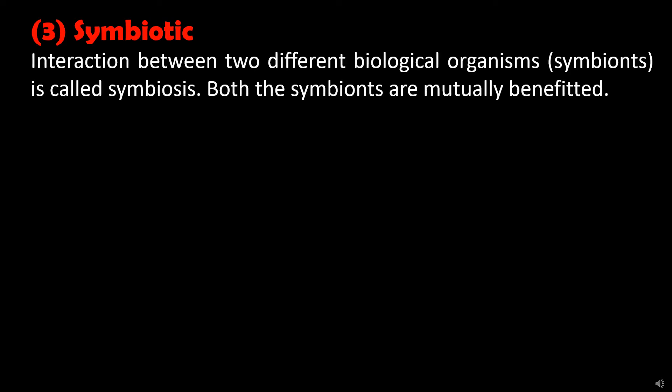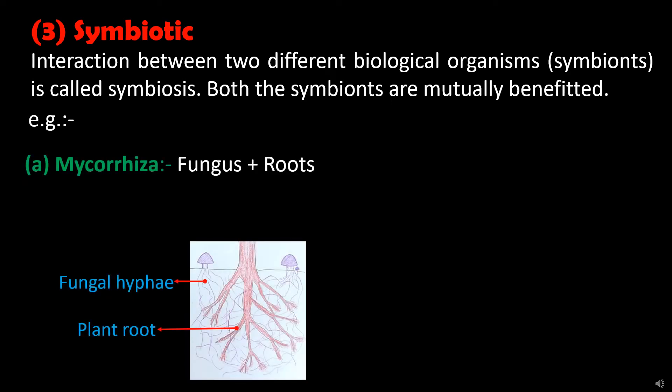The third type of heterotrophic nutrition in plants is symbiotic association. Interaction between two different biological organisms is called symbiosis, and the plants involved are called symbionts. In this association, both symbionts are mutually benefited. The first example is mycorrhiza — the association of fungus with the roots of higher plants. In mycorrhiza, fungus provides protection, water and mineral supply to the plant, and in return, the roots of higher plants provide shelter and carbon source to the fungus.